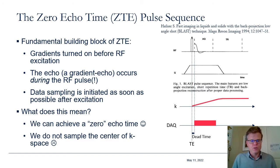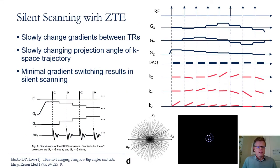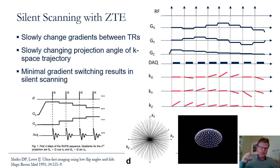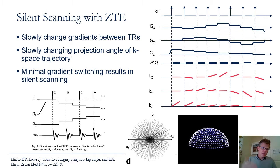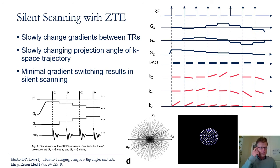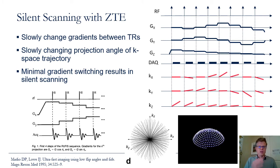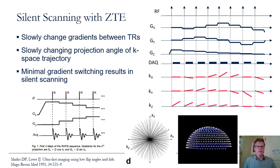The term 'zero echo time' comes from the fact that the echo is during the RF pulse. One challenge is that we are not sampling the center of k-space and will have to address that. One of the main advantages of the ZTE pulse sequence is silent scanning. By having the gradient on before the RF pulse, we can slightly increment the gradient amplitudes between TRs, slowly changing the projection angle acquired in k-space. Since gradient switching causes acoustic noise in MRI, this minimal switching results in effectively silent scanning.